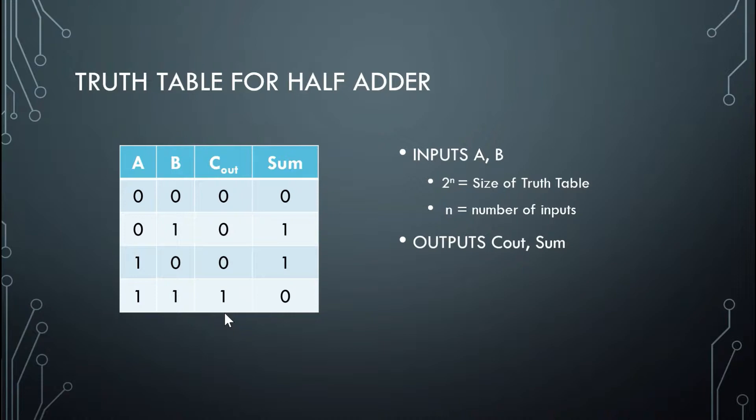Now we need to know when our Cout and our Sum are going to be high. We know 0 plus 0 is equal to 0, and we don't have any carryouts. And we also know that 0 plus 1 is equal to 1 with no carryouts. And the same goes for this case. And then here is the special case that we were talking about on the last slide. The 1 plus 1 is equal to a sum of 0 with a carryout of 1.